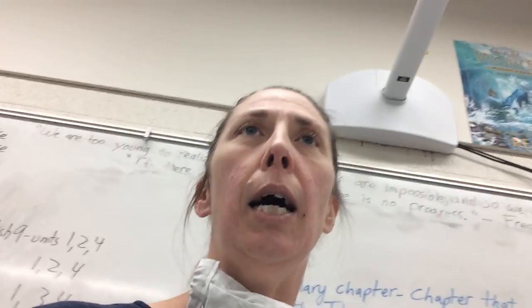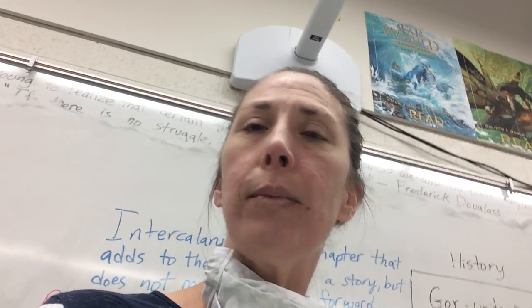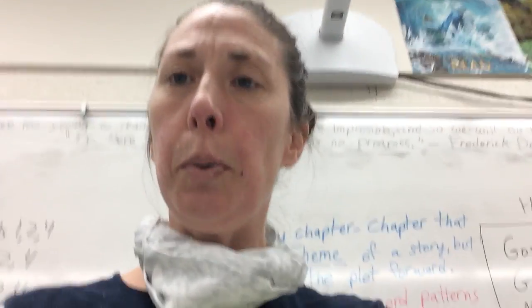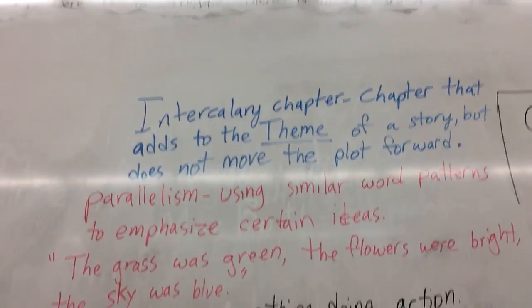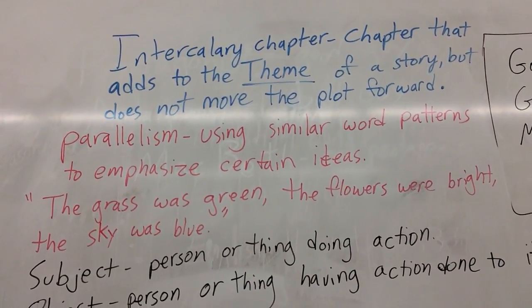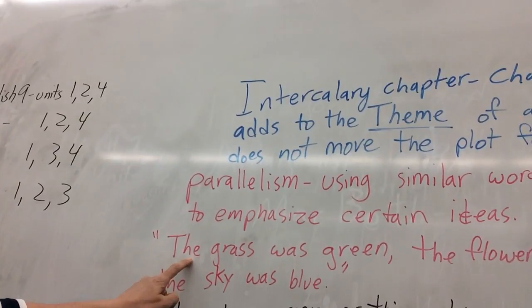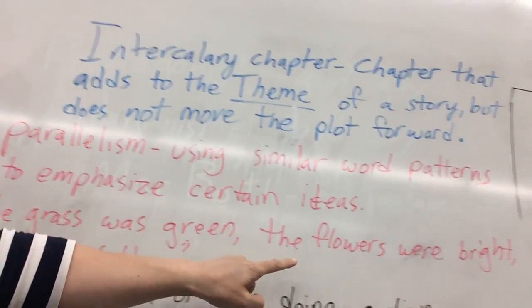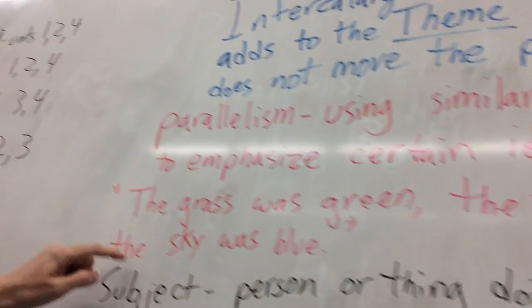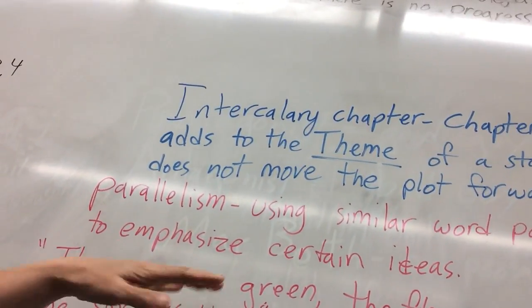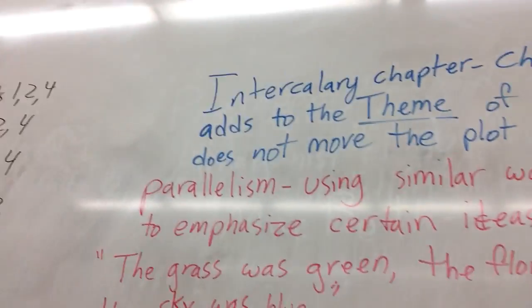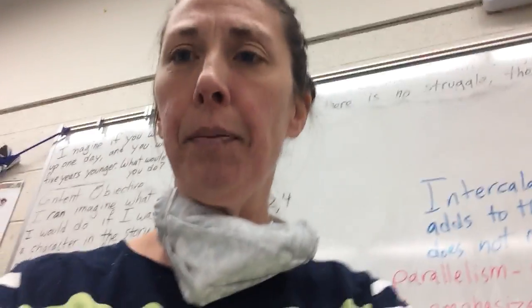Parallelism is where a writer uses a similar style — similar word patterns — within the same sentence to emphasize an idea. Here's an example of parallelism: 'The grass was green, the flowers were bright, the sky was blue.' You can see parallelism there — there's a similar word structure throughout, emphasizing the idea that it's a nice day.